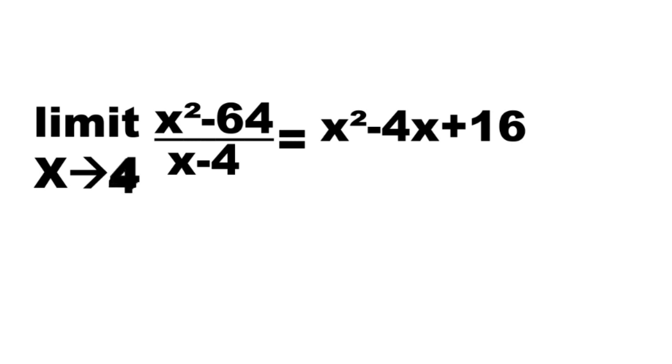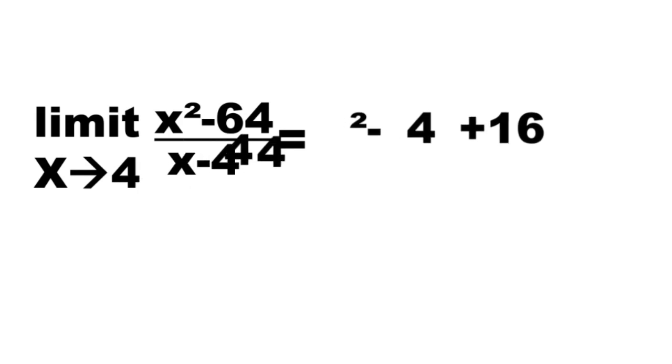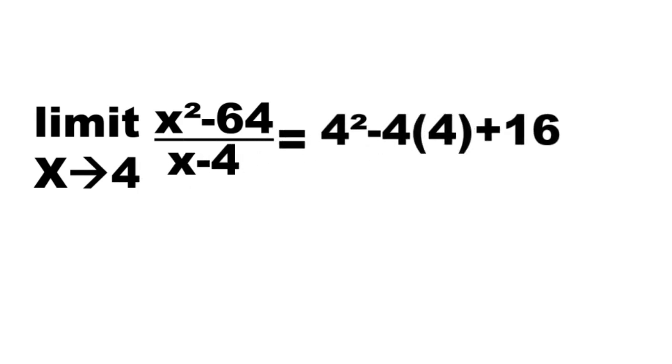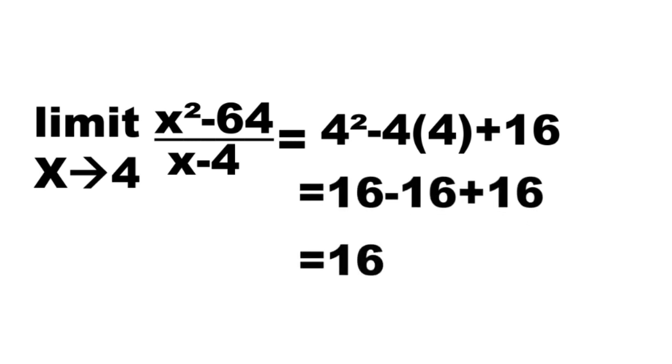Now substitute 4 for x, so 4 squared minus 4 times 4 plus 16. 4 squared is 16 minus 4 times 4 which is 16 plus 16. So 16 minus 16 plus 16 equals 16. And this is the limit we are looking for.